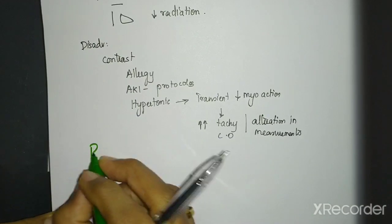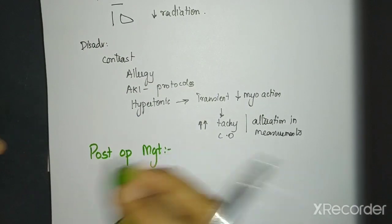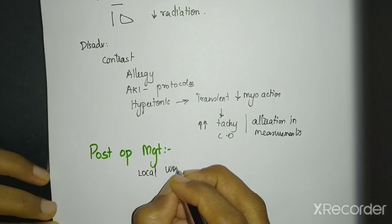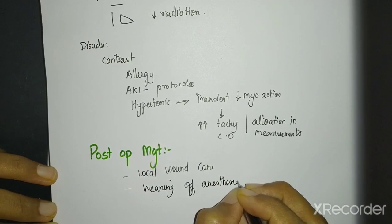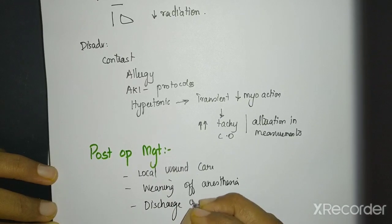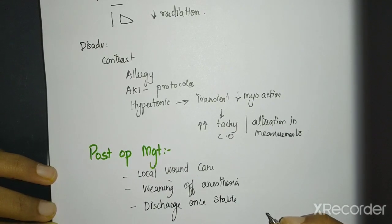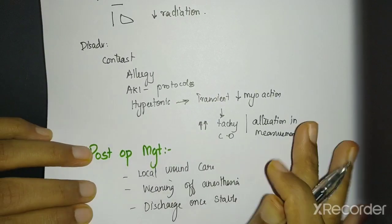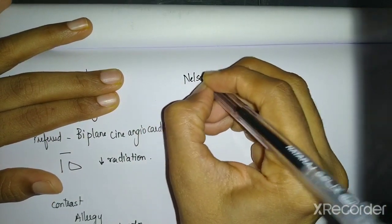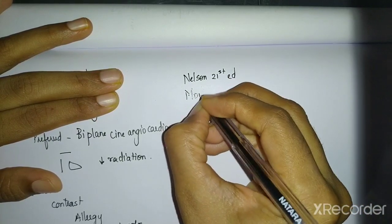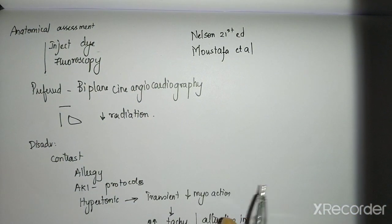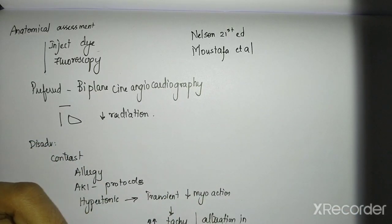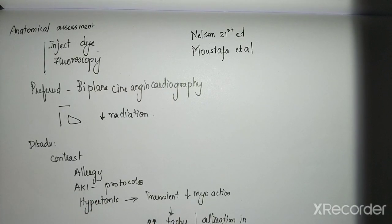So these are all the things that you are going to do with your diagnostic cardiac catheterization. And don't forget to end with a post-op management. Nothing much in post-op management. Local wound care. Then weaning of anesthesia. Discharge once stable. So I think if you know this much, this is more than enough for your diagnostic cardiac catheterization. If I have forgotten some points, I will mention in the description box. I forgot to mention my references. My references are Nelson 21st edition. And a paper called Mustafa et al which I will be linking down below. So thank you guys for your patient listening. Share among your classmates also. So they can also learn this important question. I think this can probably be asked. And if diagnostic is asked, I think interventional cardiac catheterization also can be asked. Bye bye. Take care.